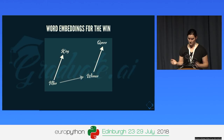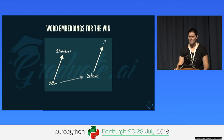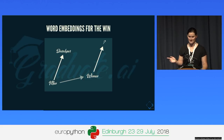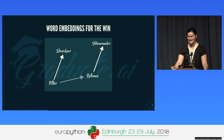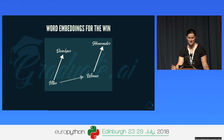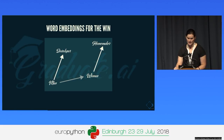Let's do that with job names. Take developer, subtract man, add woman. What do you get? Homemaker. That's not so great, right? The problem is the same as before: we're learning from data produced in our society, so we've encoded the biases of our society.